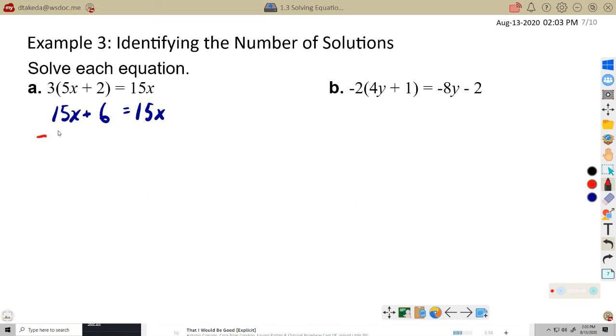We said that we would collect all of the variable terms on one side. So I'm going to subtract 15x from the left side. And I'll subtract the same thing from the right side. So 15x minus 15x is 0. That leaves me 6 equals 0. And when my variables are gone, so variables gone, and I have an untrue statement, 6 does not equal 0, so that's an untrue statement, then we say no solution.